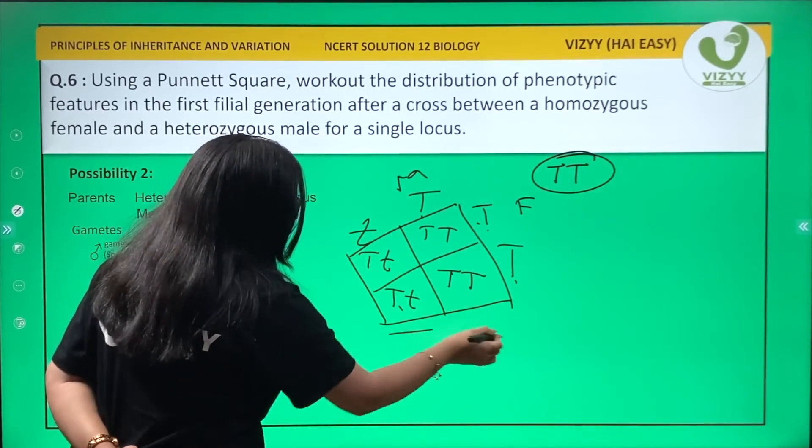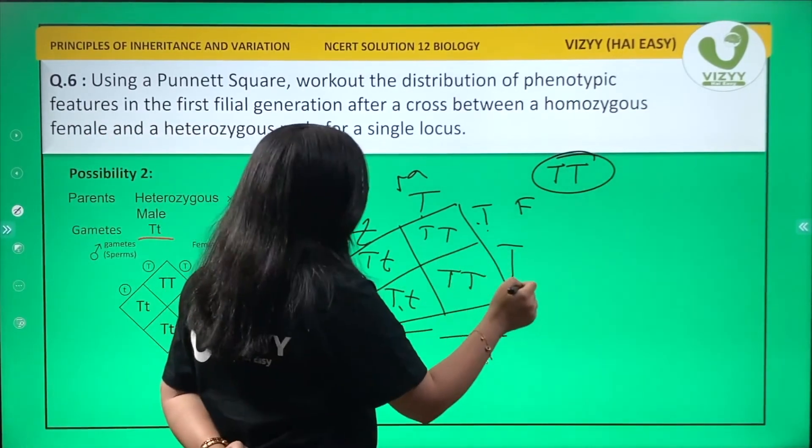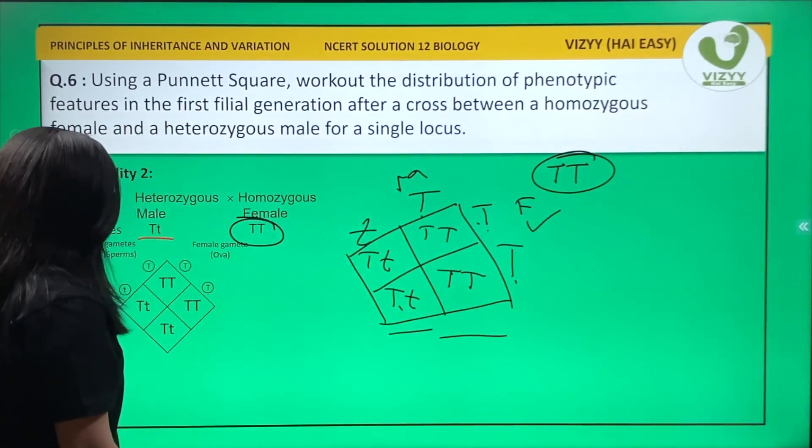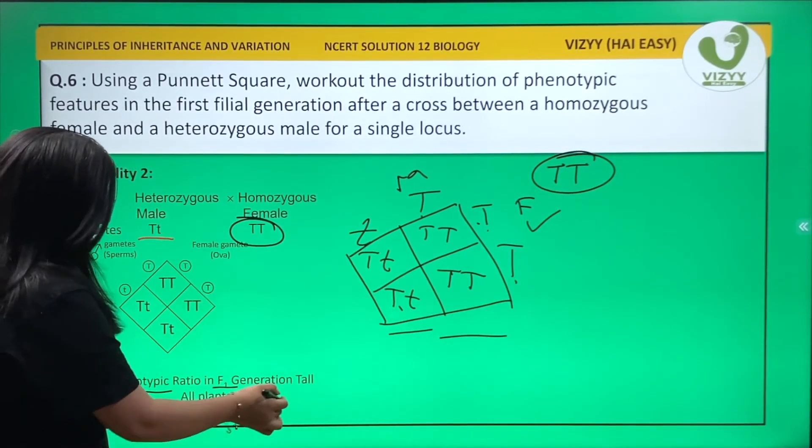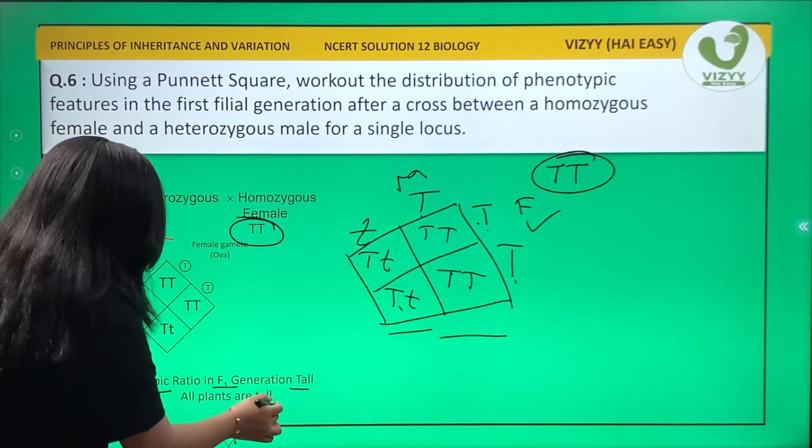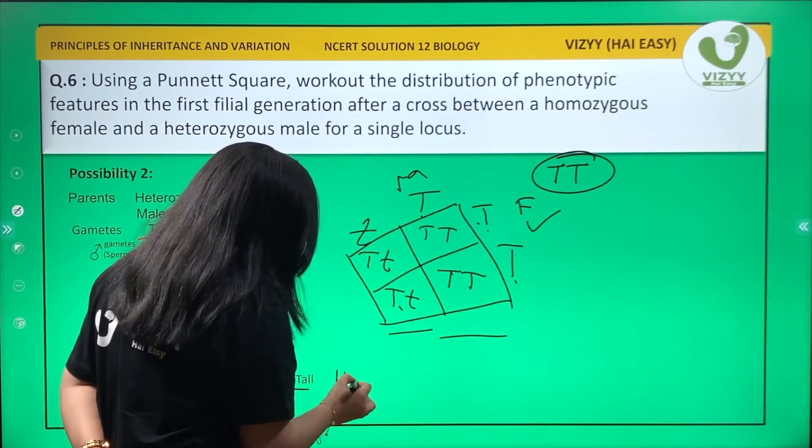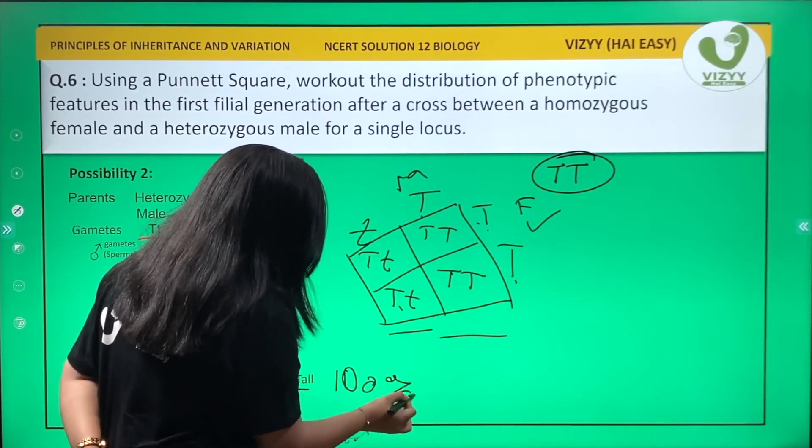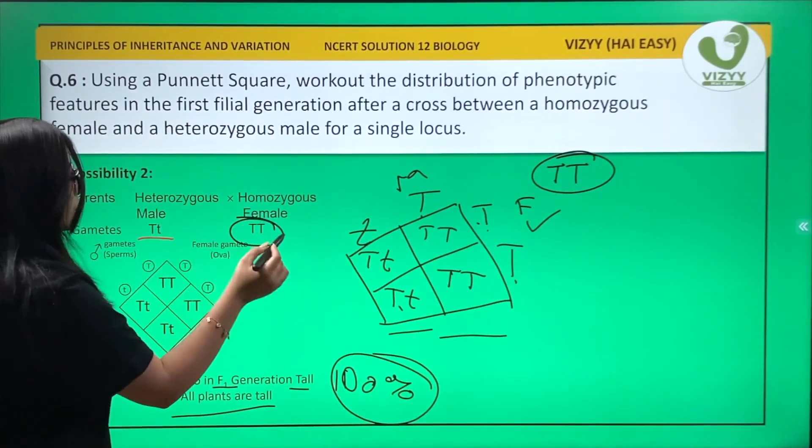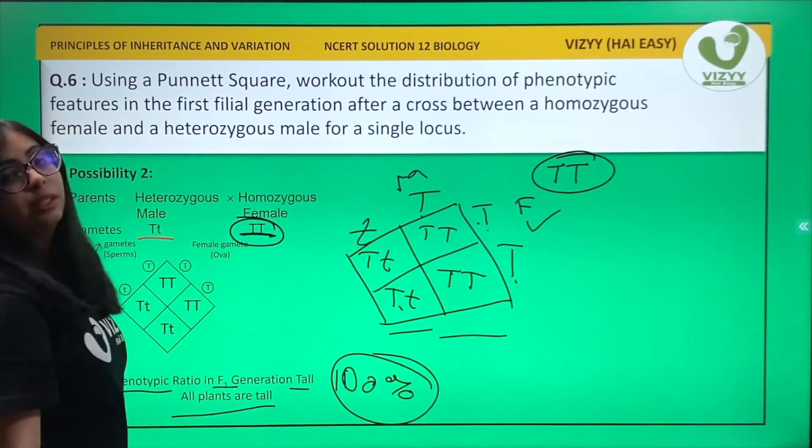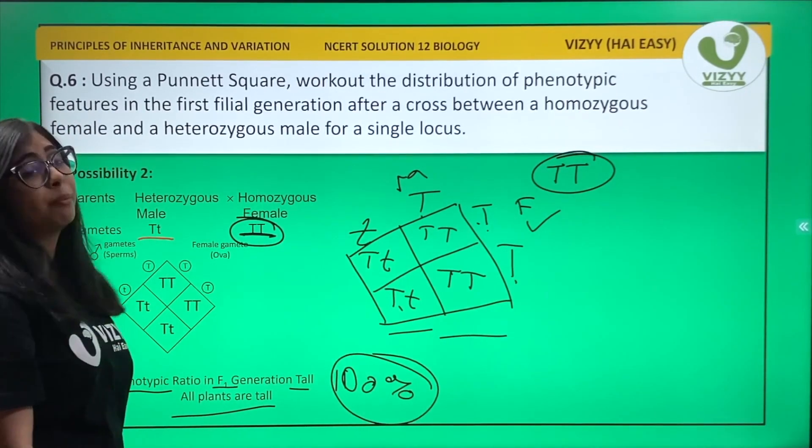All offspring are tall. The phenotypic ratio of F1 generation is 100% tall - all plants are tall when they are crossed with a dominant homozygous female. We are done with question 6.